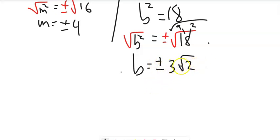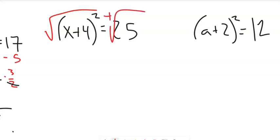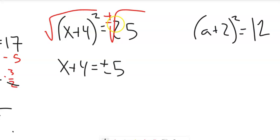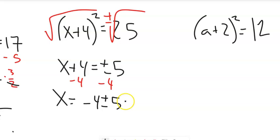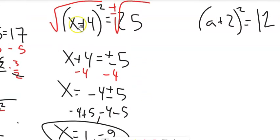Notice there are two answers: negative 3 root 2 and positive 3 root 2. Now this next one is in a convenient form — something squared equals 25. It's tempting to multiply it out, but let's just square root both sides to get rid of that square. Bringing in the plus or minus, the square root and the squared undo each other, leaving x plus 4 on the left and plus or minus 5 on the right. Subtract 4 from both sides: x equals negative 4 plus or minus 5. So x equals 1 or x equals negative 9.